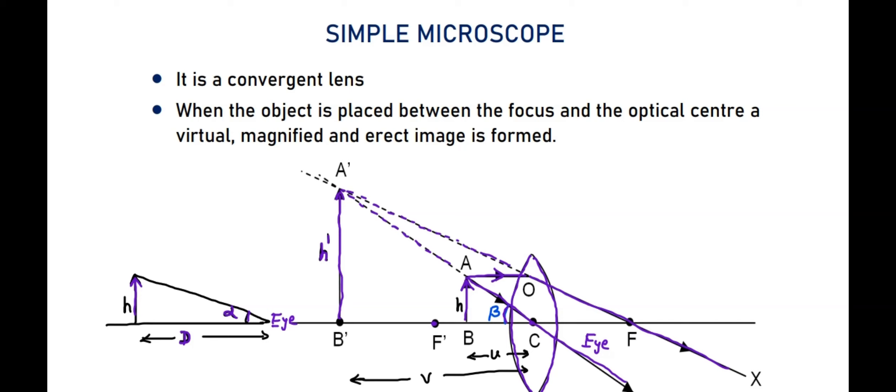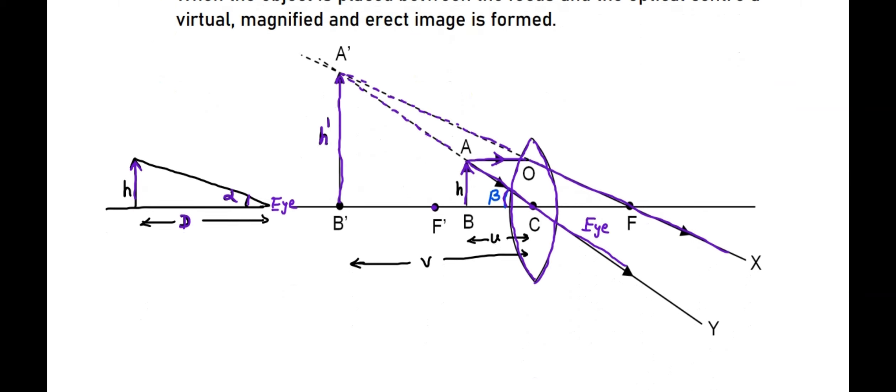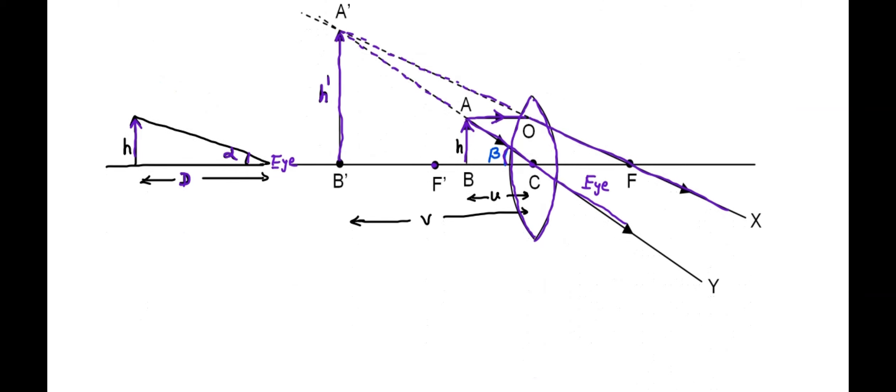Now, what are we going to find out? We are going to find out the magnifying power. So the magnifying power, or angular magnification, is equal to beta by alpha, where beta is the visual angle with the instrument. Alpha is the maximum visual angle for unaided eye.